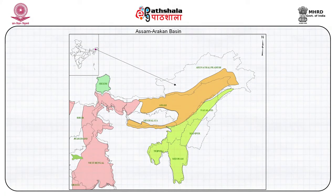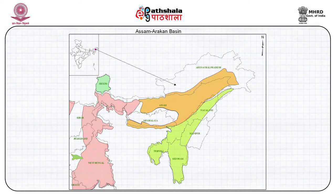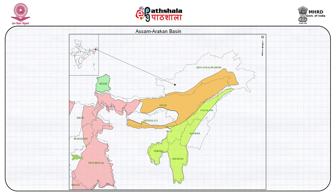The Assam-Arakan foreland basin consists of a thick wedge of pre-orogenic passive margin Cretaceous-Eocene Khasi-Jaintia Group, deep marine Oligocene Barail Group, and flysch sediments, overlaid by post-orogenic Neogene molasse of the Tipam Group. The Paleocene to Eocene continental shelf of the Indian plate, which became emergent and is being overthrusted by the Himalayas on the north-northwest and by the Naga Hills on the south-southwest, comes under the upper Assam shelf.